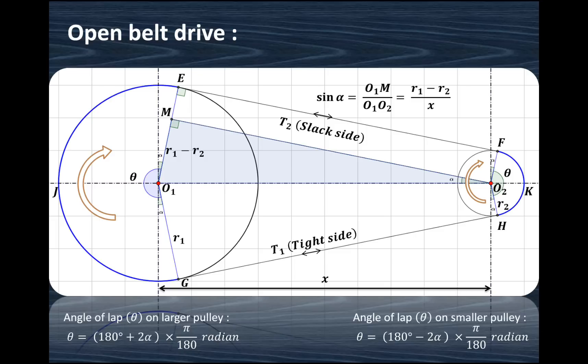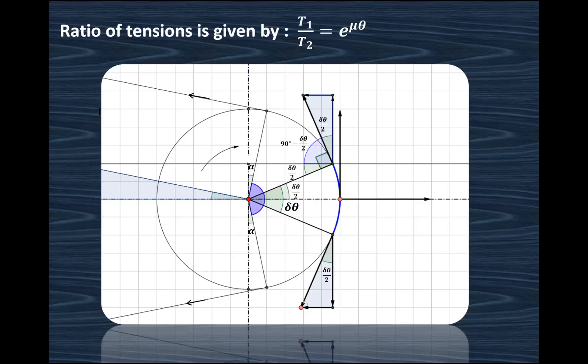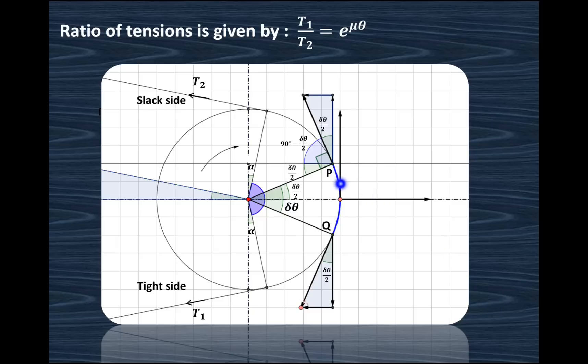Now let us derive how to derive the equation of the ratio of tensions, T1 and T2 — that is the tight side tension and slack side tension. For that, we have taken into consideration a small arc on this particular pulley. We have taken the smaller pulley, and the small arc considered is PQ.